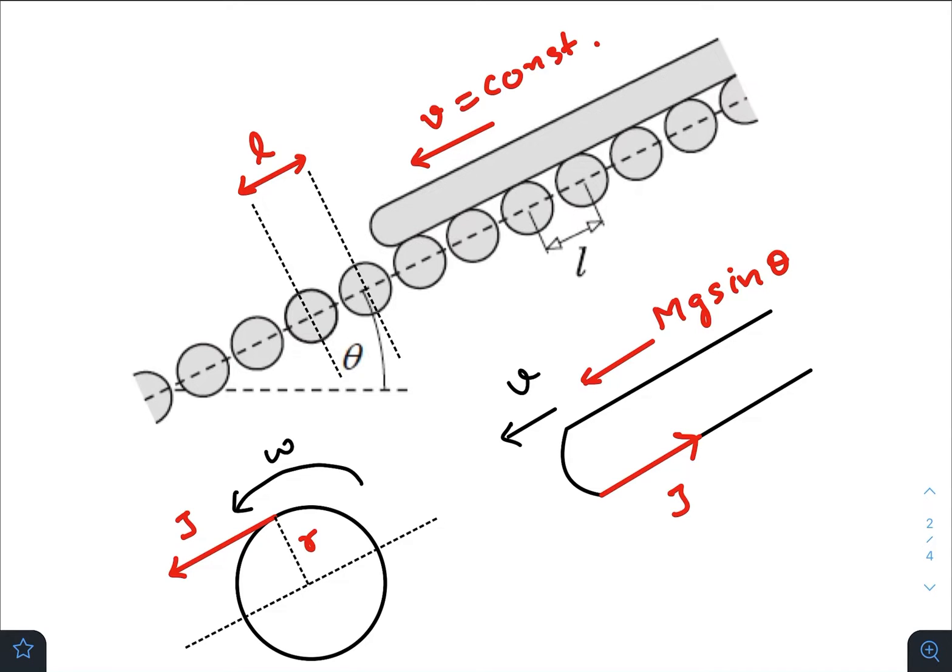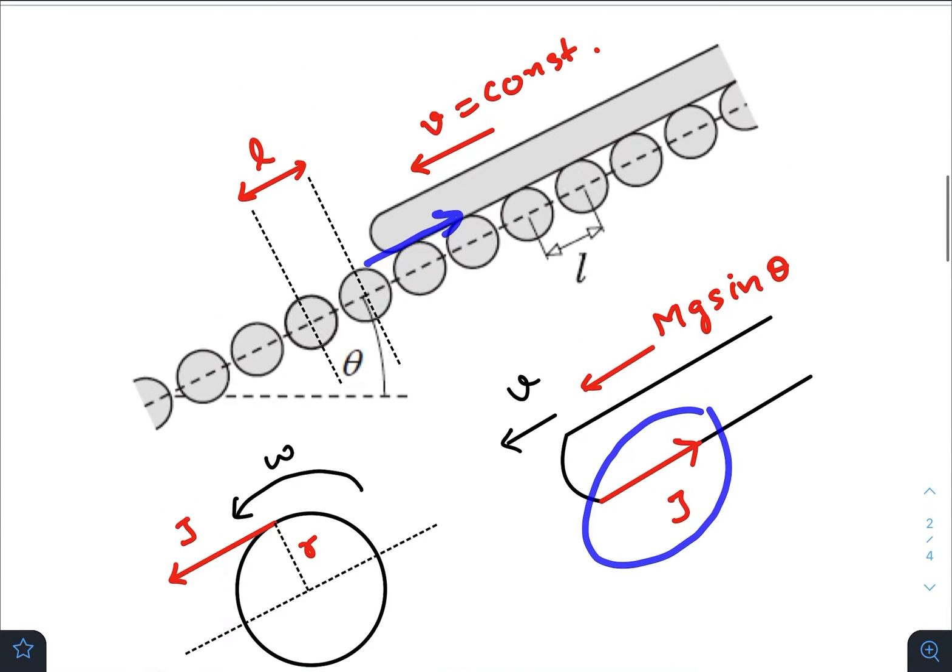Each roller applies an impulsive force trying to decrease the value of v. But gravity is still acting. And due to that impulsive force, there is a reactionary impulsive force on each adjacent cylinder, trying to roll this cylinder in the anticlockwise direction.